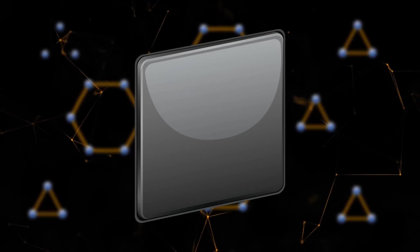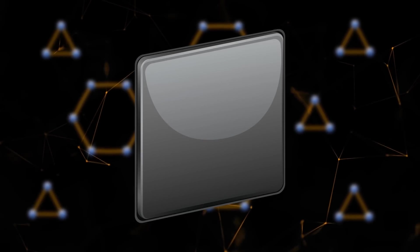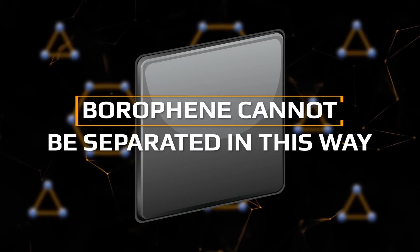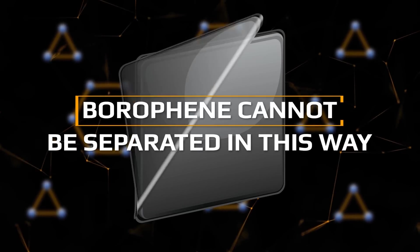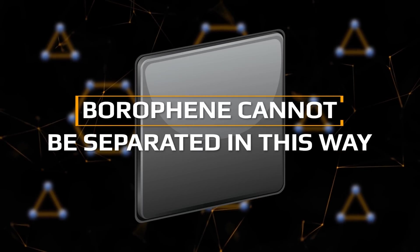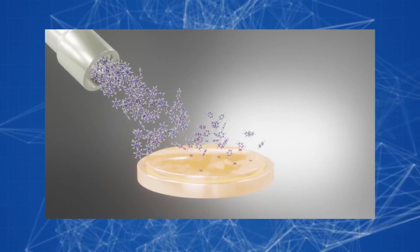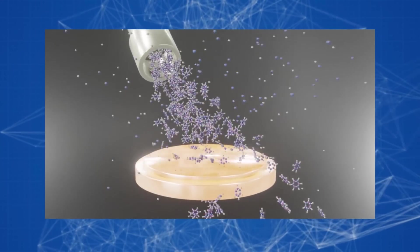The fact is that if the simplest methods can be used to produce graphene, including atomically thin exfoliation using a film with a sticky layer, then borophene cannot be separated in this way. Its structure is stronger and an atomically thin layer can only be grown on a special substrate.